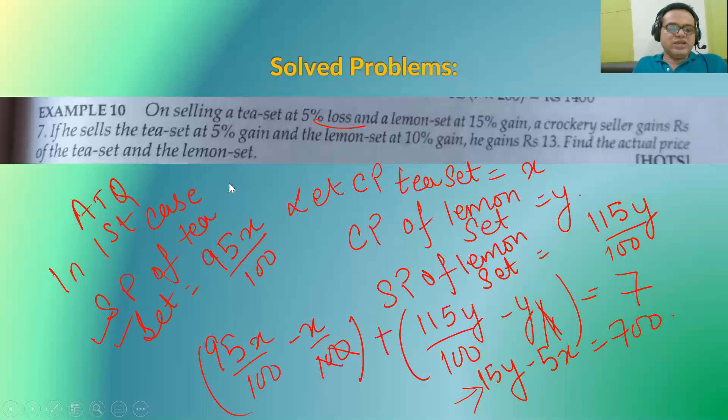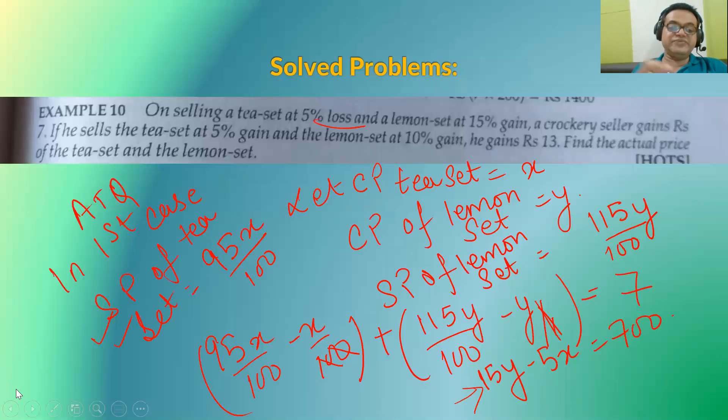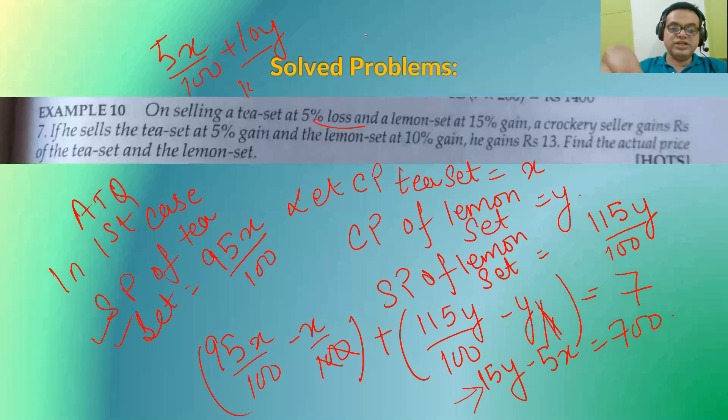The second equation, if he sells the T set at 5% gain and lemon at 10% gain. So here in this case, what will be my equation? T set is selling at 5% gain. That is 5X upon 100 plus 10Y upon 100 will be equal to 1300. So from here, one equation that I will get that will be 5X plus 10Y is equal to 1300.